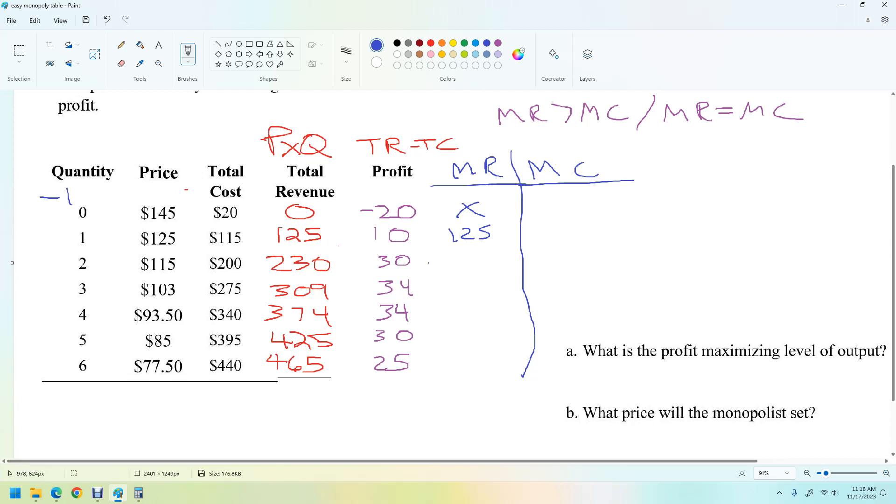OK, so the change in total revenue there would be 125. The change here would be 95. The change here would be 79. The change here is 65, I think so.